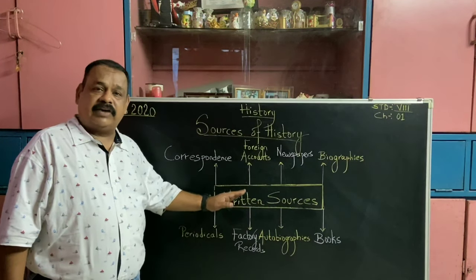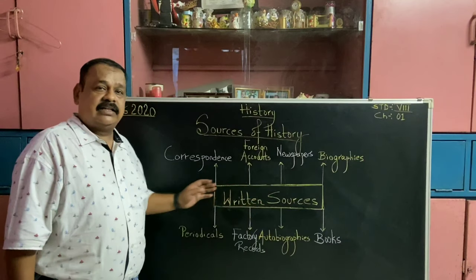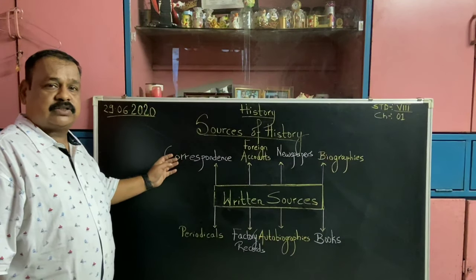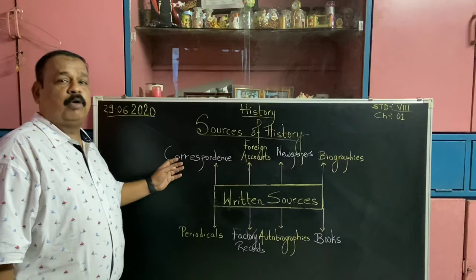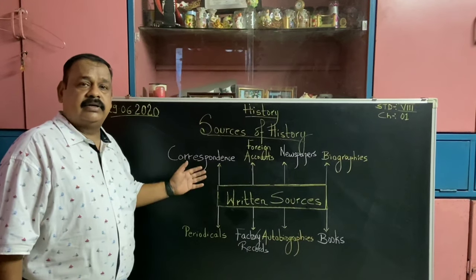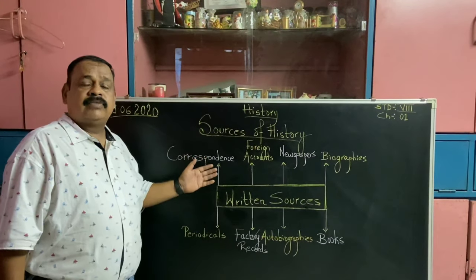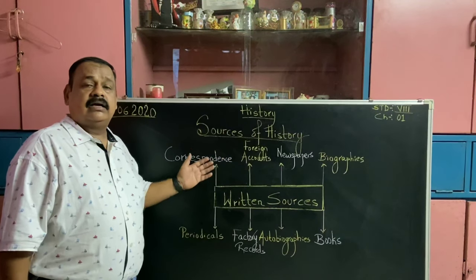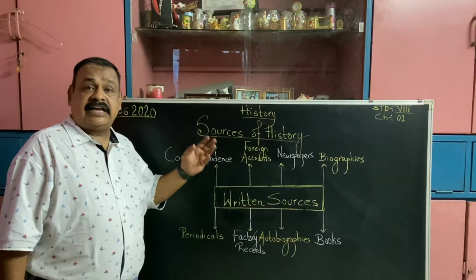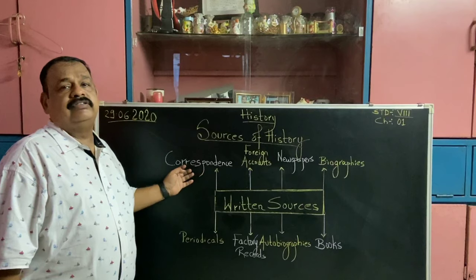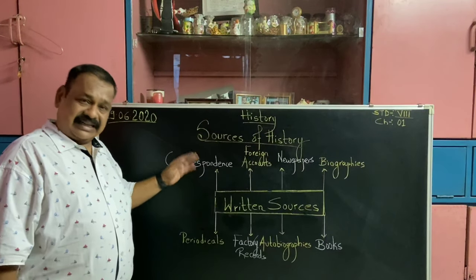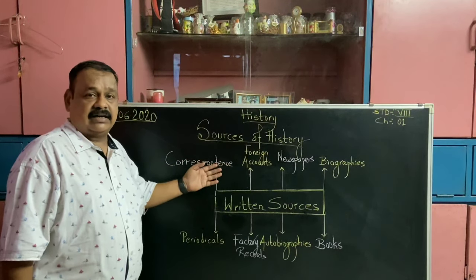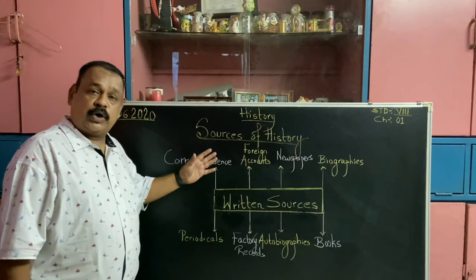So what are these various sources of written history? The very first source of written history is correspondence. Now what is correspondence? The two sections — the primary and the secondary — are included in correspondence when we talk about history. We will surely discuss the details about it in the ninth standard. I don't want to confuse you now.